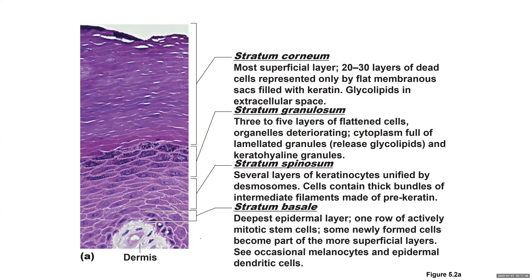This diagram shows thin skin, not thick skin — I can tell because it's missing stratum lucidum. Starting from deep and moving to superficial: stratum basale is the deepest epidermal layer, with one row of actively mitotic stem cells. Some newly formed cells become part of the more superficial layers. You can occasionally see melanocytes and epidermal dendritic cells in this layer. Next is stratum spinosum — several layers of keratinocytes unified by desmosomes, containing thick bundles of intermediate filaments made of pre-keratin.